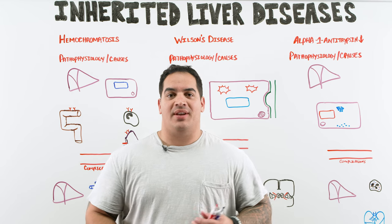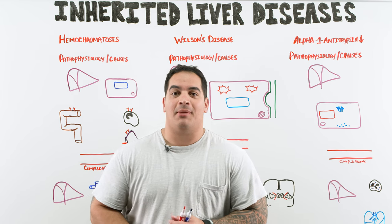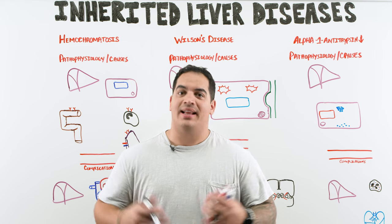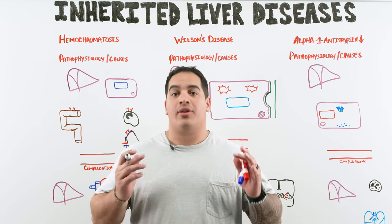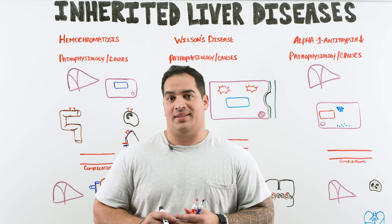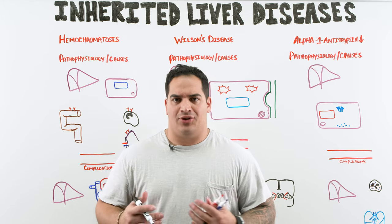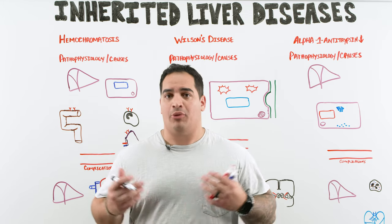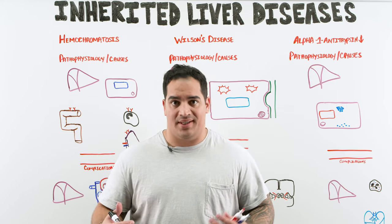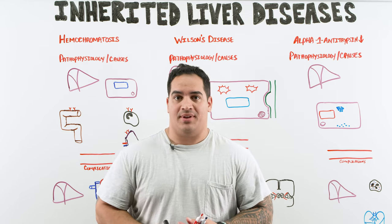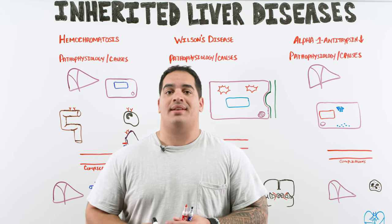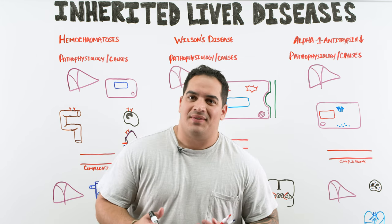What's up ninja nerds. In this video we're going to be talking about inherited liver diseases. This is an interesting topic that will include three particular types: hemochromatosis, Wilson's disease, and alpha-1 antitrypsin deficiency. This is part of our clinical medicine section.